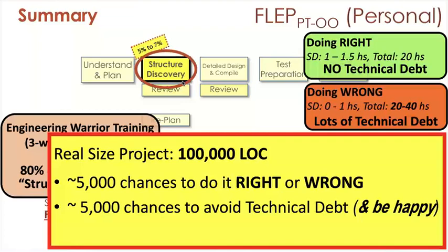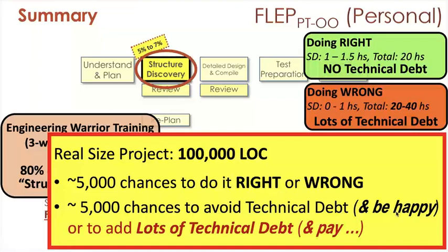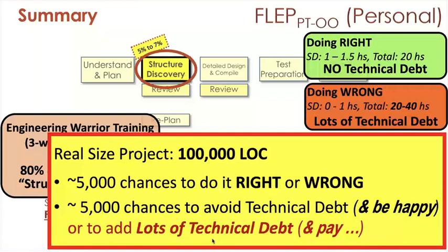Well, what's happening with a real-size project? These two were toy problems. A real-size project not too big is 100,000 lines of code. This means about 5,000 chances to do right or wrong. 5,000 chances to avoid technical debt and be happy or to add lots of technical debt and pay. If you get technical debt, you will pay. Sooner or later, you will pay. Thank you.